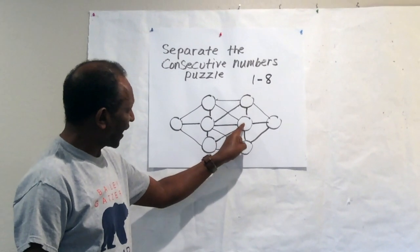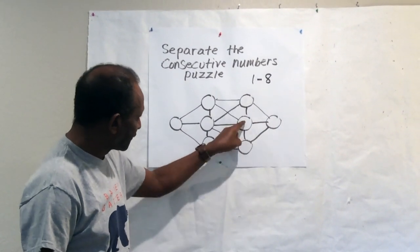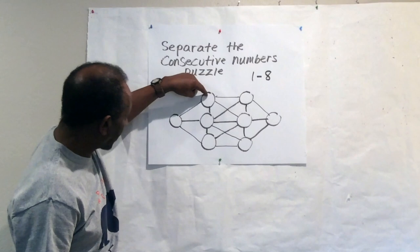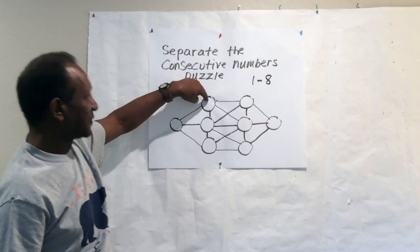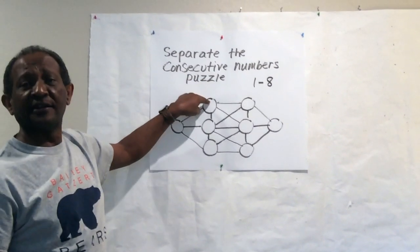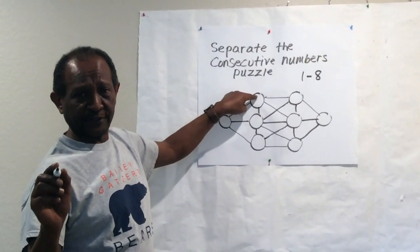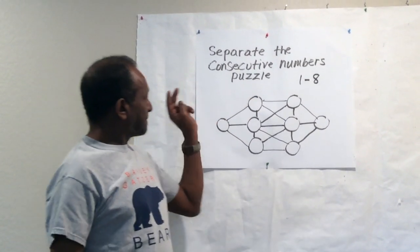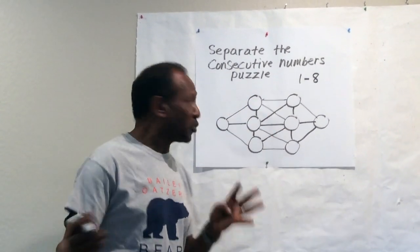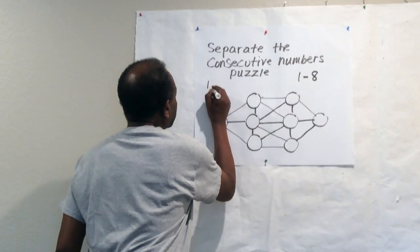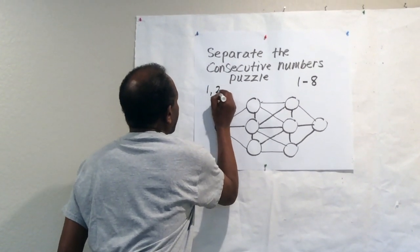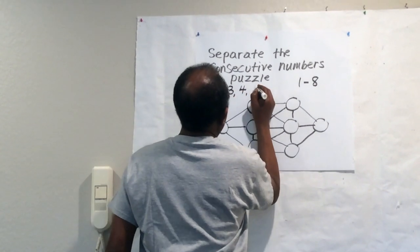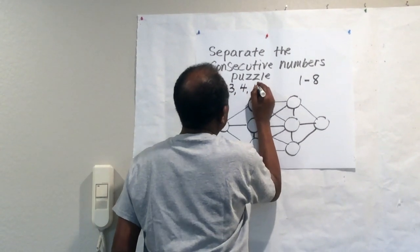These circles are connected by a line. These two circles are connected by a line. These two are connected by a line. Here are the rules: you're going to put the numbers one to eight so that consecutive numbers will not be next to each other.